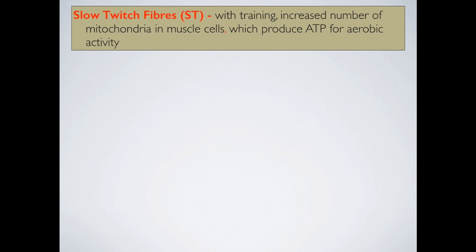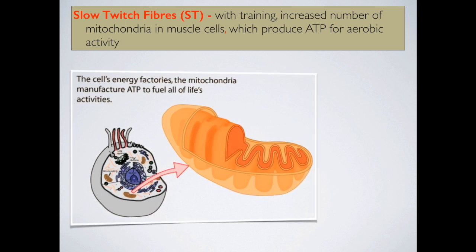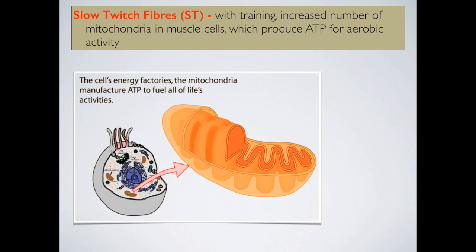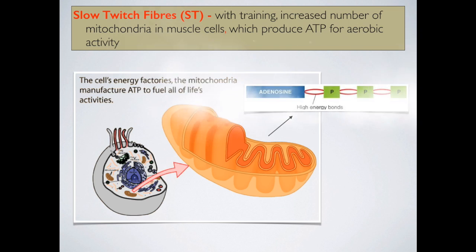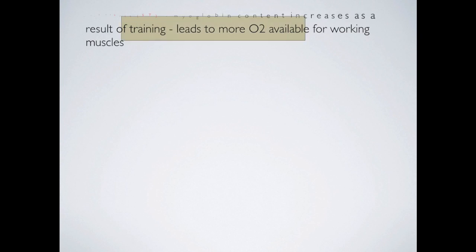With training, an increased number of mitochondria is present in the muscle cells, and this mitochondria produces ATP for aerobic activity. Slow twitch fibres have more mitochondria inside the muscle cells, and when we train we improve this even further. Slow twitch fibres will generate more mitochondria, which will produce more ATP for aerobic activity, which means the athlete can run for longer, swim for longer, and so on.